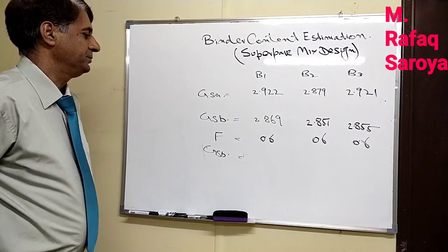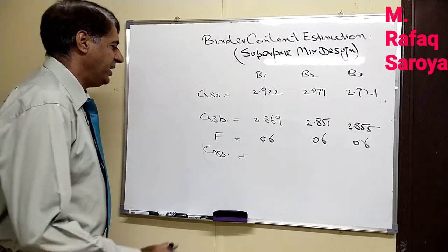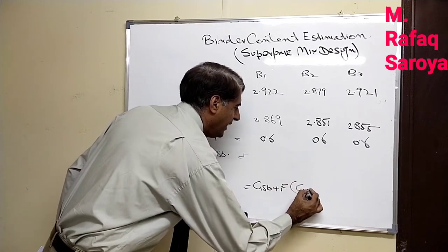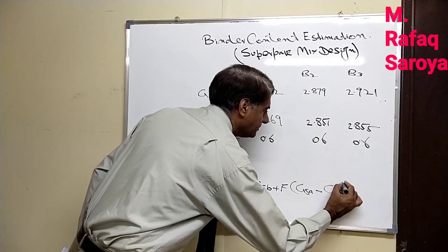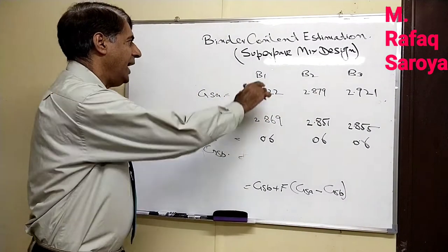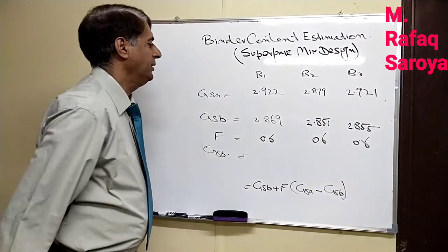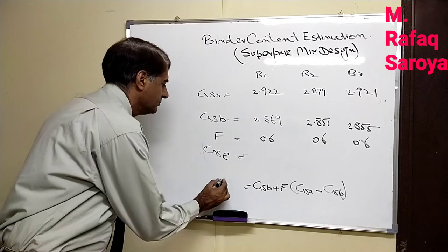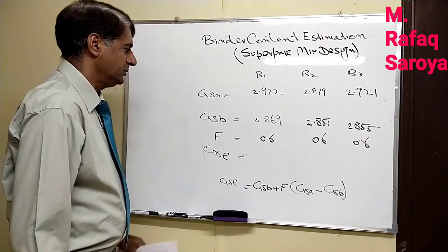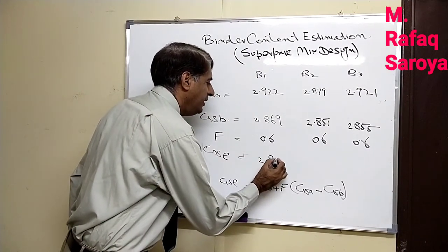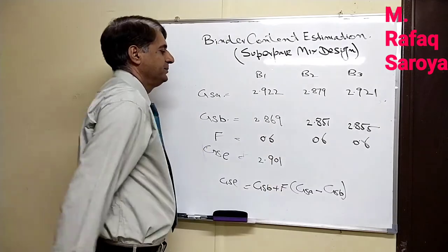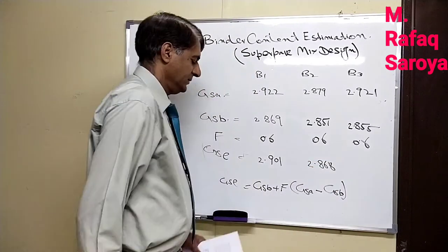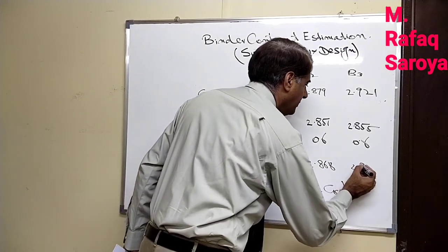I will not go in detail how I am going to compute it, but just I will write down the formula again: GSB plus F times (GSA minus GSB). I will put these values given over here in this formula. The value of effective specific gravity will come out as: 2.901, 2.868, and 2.895.